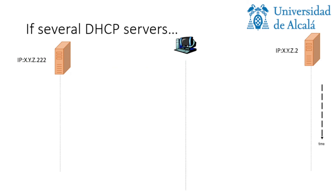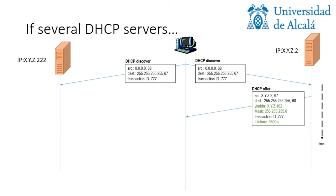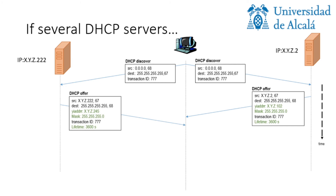What happens when we have several DHCP servers? In this case we are showing it with a diagram. We have one server here and another here, and this is the host requesting the IP. The DHCP discover message will arrive to all DHCP servers belonging to the same subnet of the host. Both servers belong to the same subnet and both will receive it. Both of them will eventually reply with an offer — .2 replies first, but .222 will reply also.